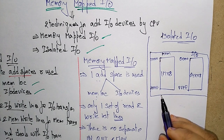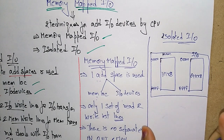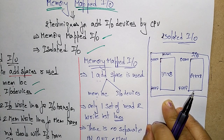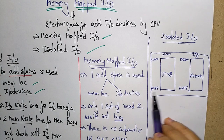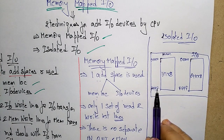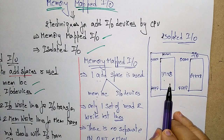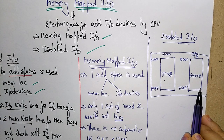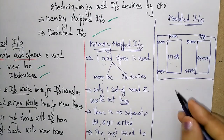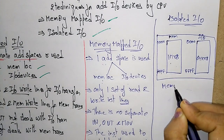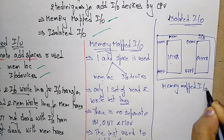In isolated I/O, the memory is divided into two separate address spaces — one space is for memory and one space is for I/O. For memory, the addresses go from 0x00000 to 0xFFFFF, holding one megabyte of memory by eight bits, whereas I/O is 64 kilobytes by eight bits.